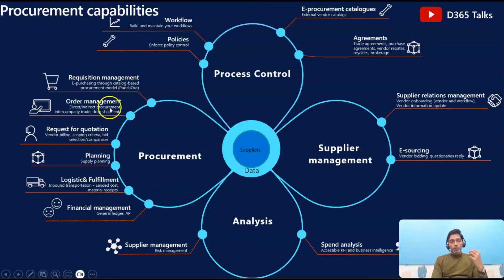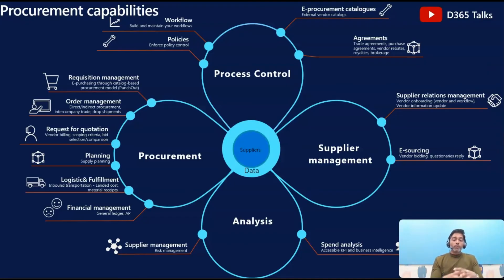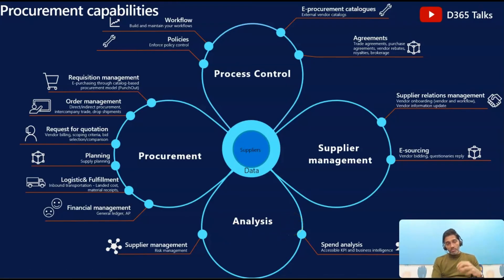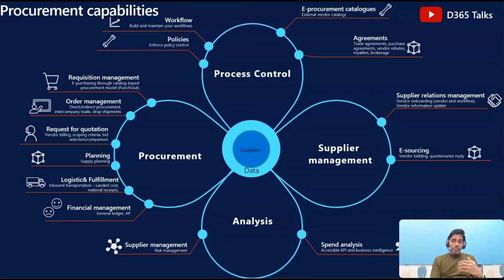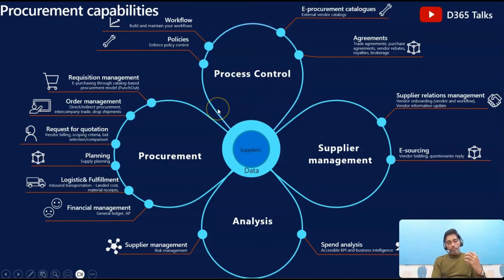Procurement and Sourcing is where you identify the need for a product or service, understand the requirements, place the order with your vendor, build vendor relationships, receive those materials, track them, and make payments to the vendor. It starts from requisition management, order management, request for quotation, planning, logistics and delivery — where the delivery schedule comes into picture — financial management in terms of managing payments within credit terms, supplier management, and spend analysis. You can also manage your bidding processes and supplier relationships using the vendor collaboration portal, and track procurement strategies using purchasing policies and purchasing workflows.